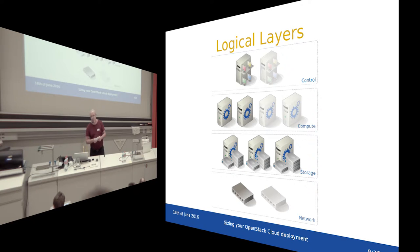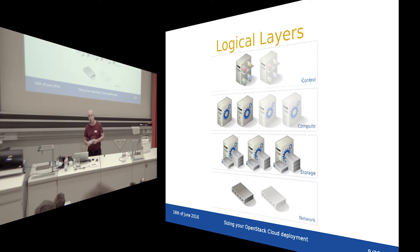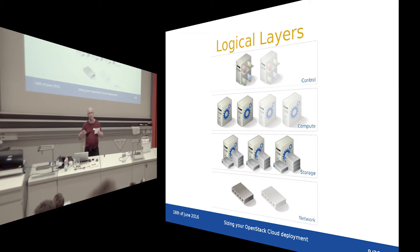On the next layer we have the compute layer — this is where VMs get their memory and CPU from. Then we have the storage layer where images and volumes are stored. And finally, we have the physical network, as all servers and elements in the infrastructure need to be connected with each other.